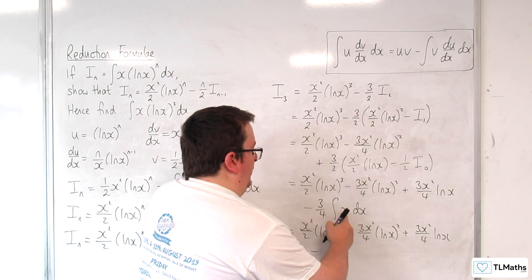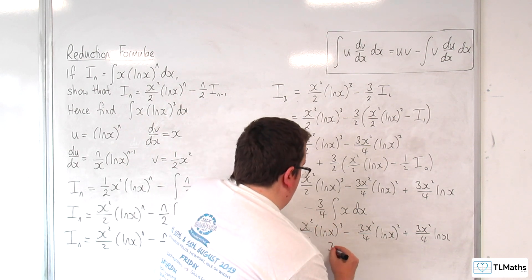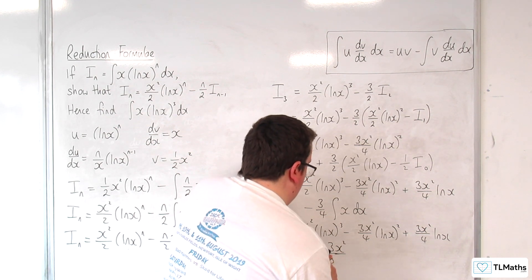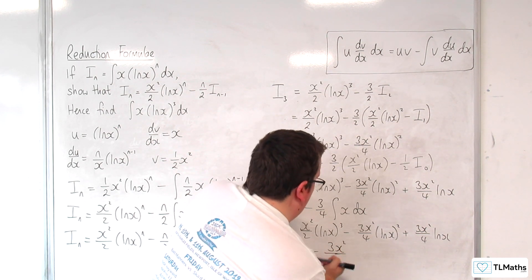take away. Now add 1 to the power, so 3x squared over 8, keep in the same format as the rest of it.